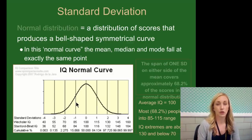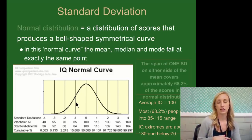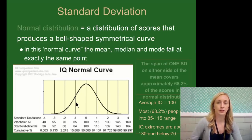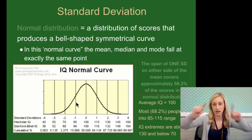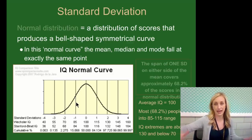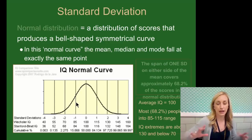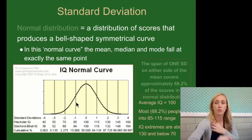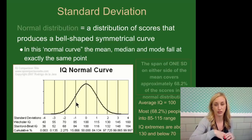Standard deviation is indicated on a normal distribution of scores — a distribution of any scores, like on a test, intelligence test, or driver's test — that produces a bell-shaped and symmetrical curve, exactly the same on either side. There's no outlying data to skew and make it asymmetrical. In this normal curve, the mean, median, and mode fall at exactly the same point because it's so symmetrical — the mean is not being pulled by outlying extreme scores. The span of one standard deviation on either side of the mean covers approximately 68.2% of scores in the normal distribution.